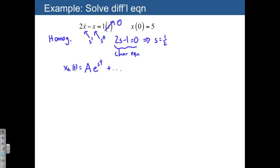In this case, we only have one s. So what we end up with is A e to the 1 half t, where the variable A is going to remain unknown for now. So A is unknown until later when we're going to solve for it using the initial conditions.